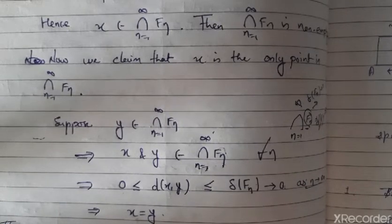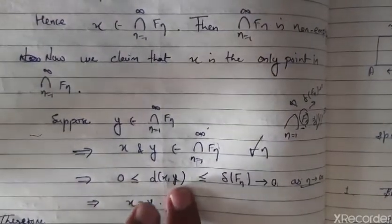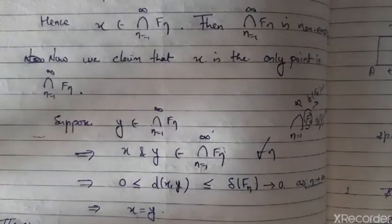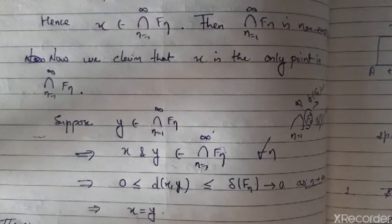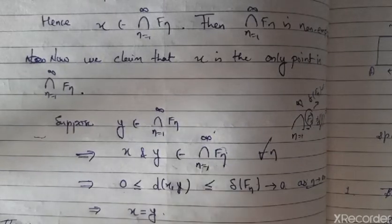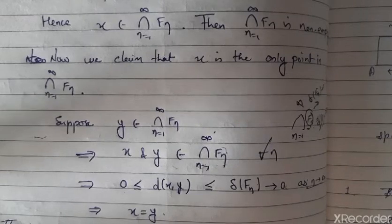Since the diameter of Fn tends to zero as n tends to infinity, the diameter of the intersection also tends to zero. Therefore zero is less than or equal to d(x, y) is less than or equal to zero, which means d(x, y) equals zero, so x equals y. Thus the infinite intersection of closed sets is non-empty and contains exactly one point. The theorem is proved.